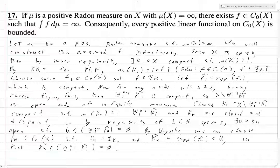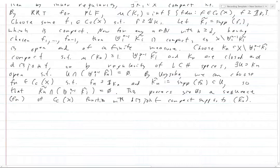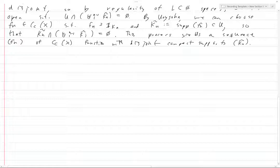This process yields a sequence f_n of compactly supported C_c functions with disjoint compact supports. Now that we've gone through all that work, we're finally ready to construct our function.